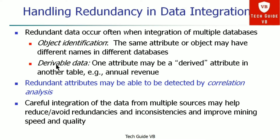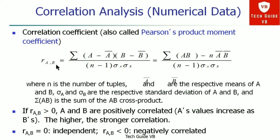The solution for redundancy is correlation analysis. First, from the numerical data point of view, we form a correlation coefficient, also called Pearson's product moment coefficient. The formula is: summation of (A minus A-bar) times (B minus B-bar), divided by (N minus 1) times standard deviation of A times standard deviation of B. Here, N is the number of tuples, A-bar and B-bar are the respective means of A and B, and the standard deviations are the respective standard deviations of A and B.